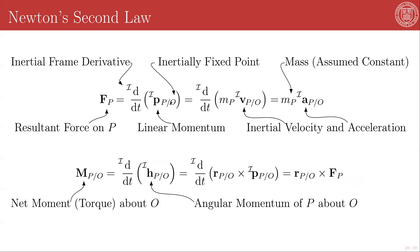The linear momentum itself is defined as the product of the mass of the particle with the inertial velocity of the particle. The velocity is the inertial derivative of the position of the particle with respect to that point, so we give it a left superscript just as if we were doing the differentiation, and we carry that left superscript into our linear momentum definition to remind us that this is an inertial quantity.